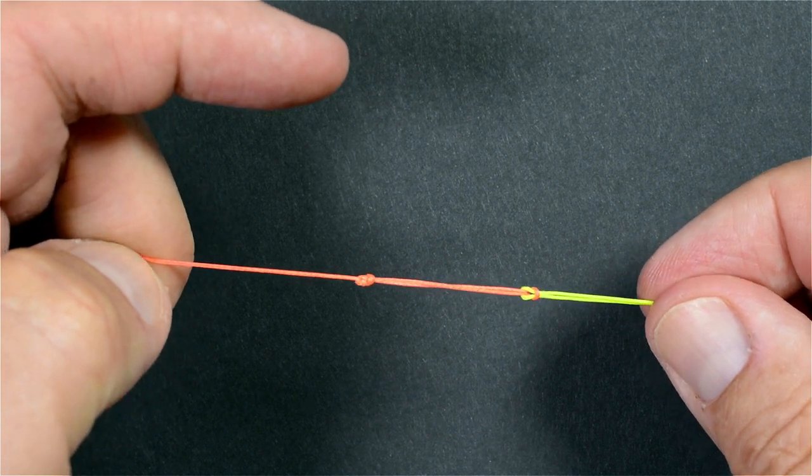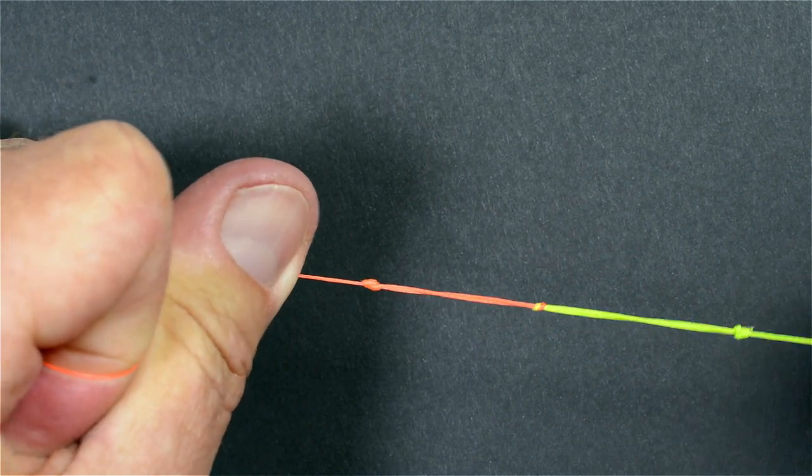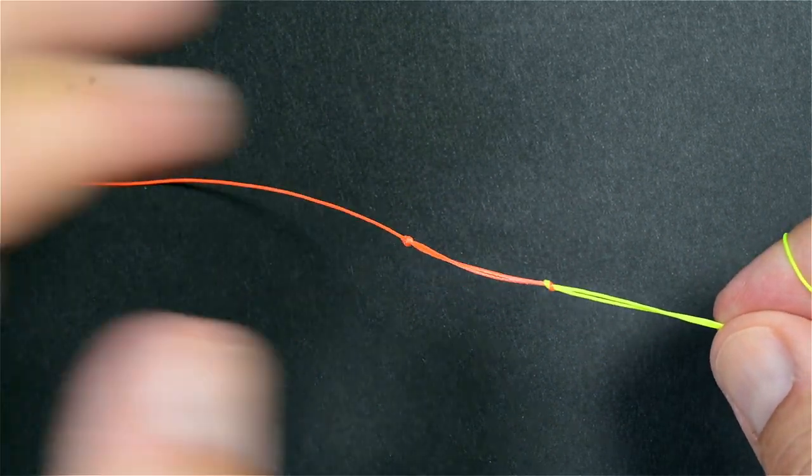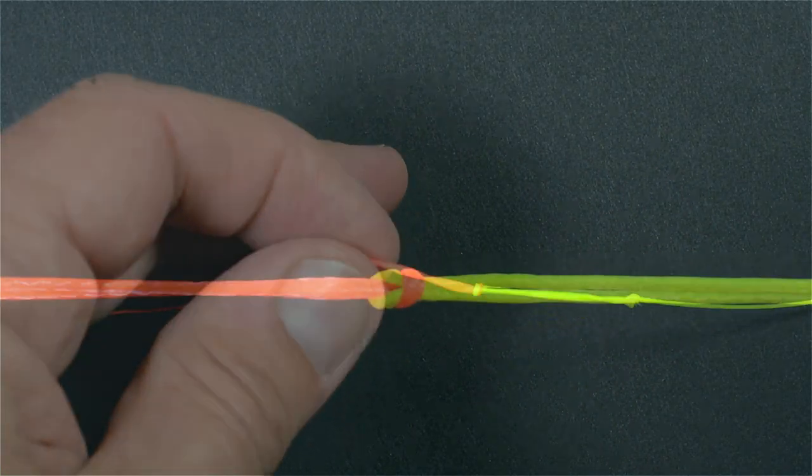This way you get four pressure points on the line, on the connection. And that gives a smooth and a very strong connection.